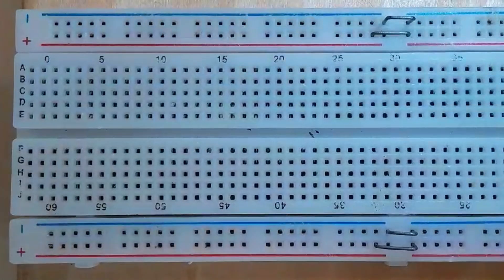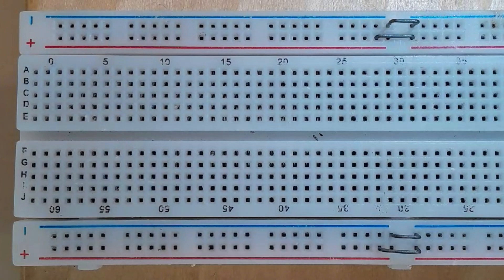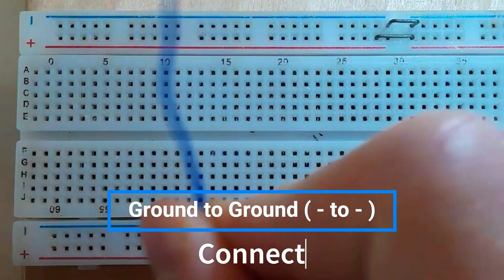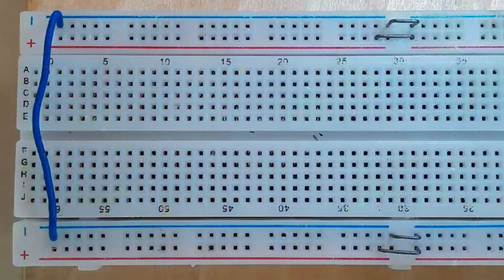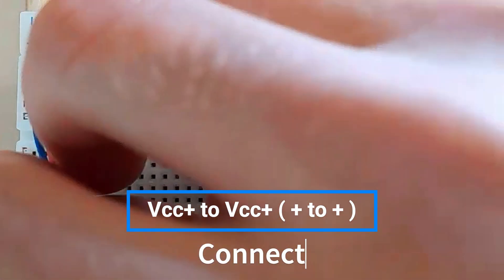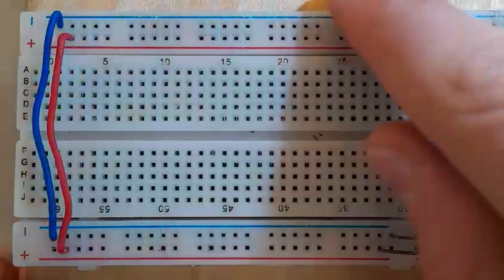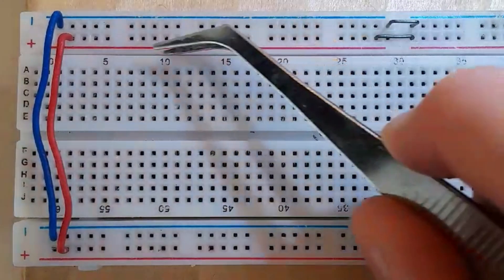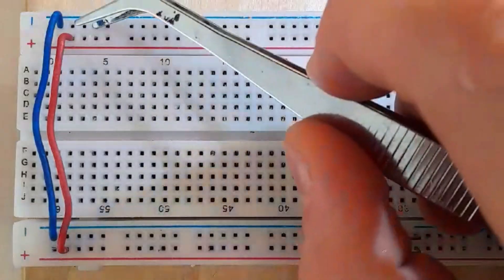First you need to connect ground with ground, and then plus or VCC with VCC like this. So now these are connected with each other, and the blue one with the blue one.